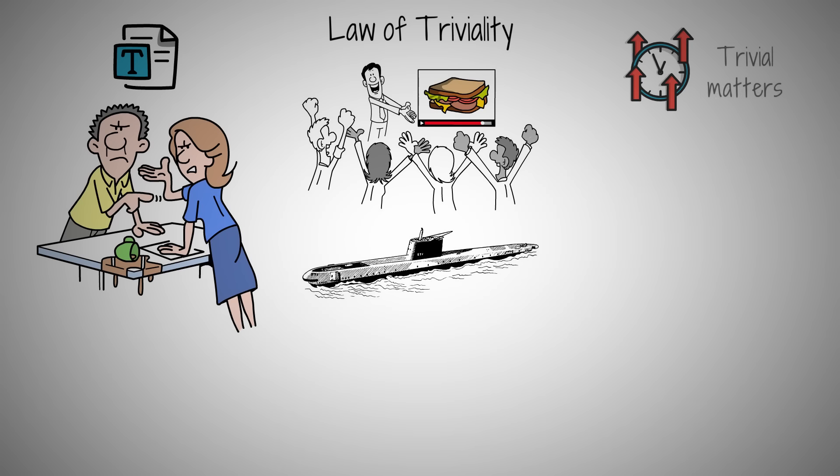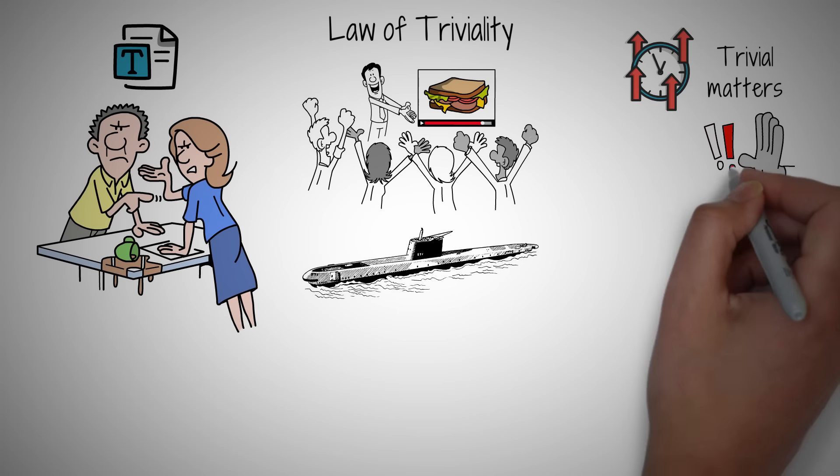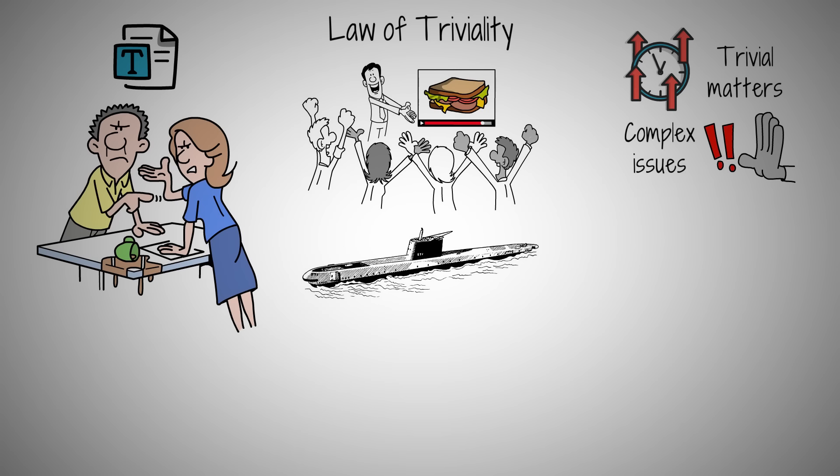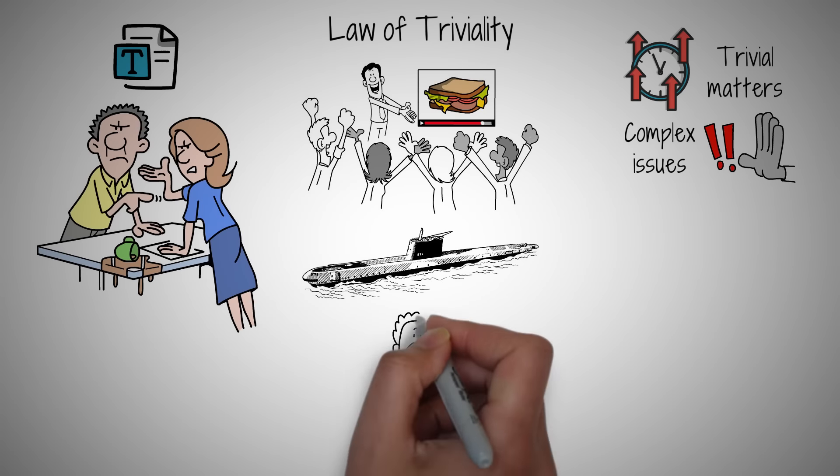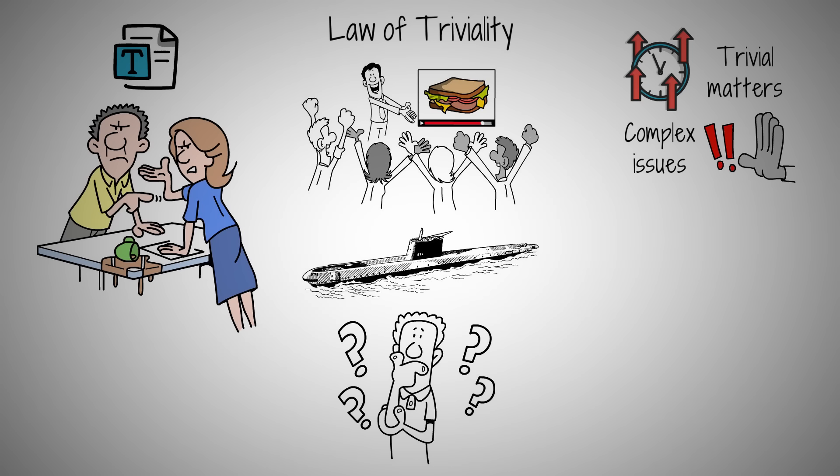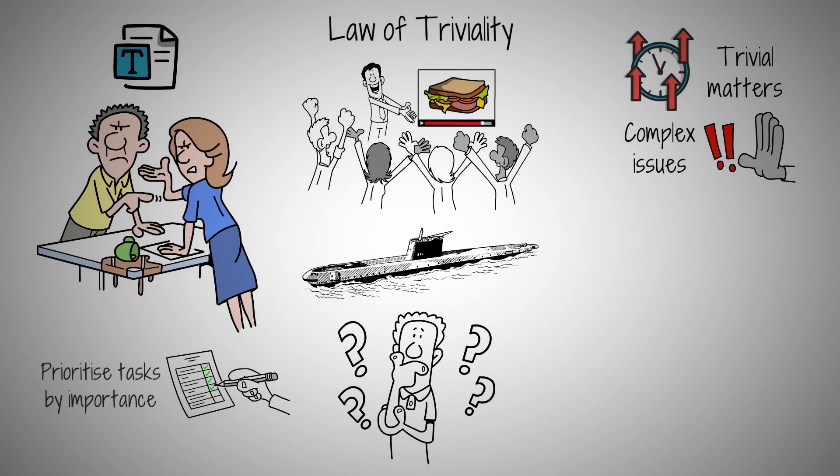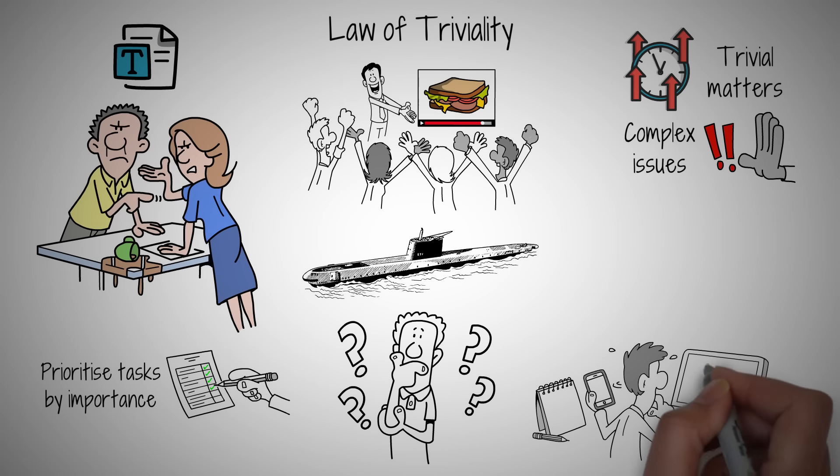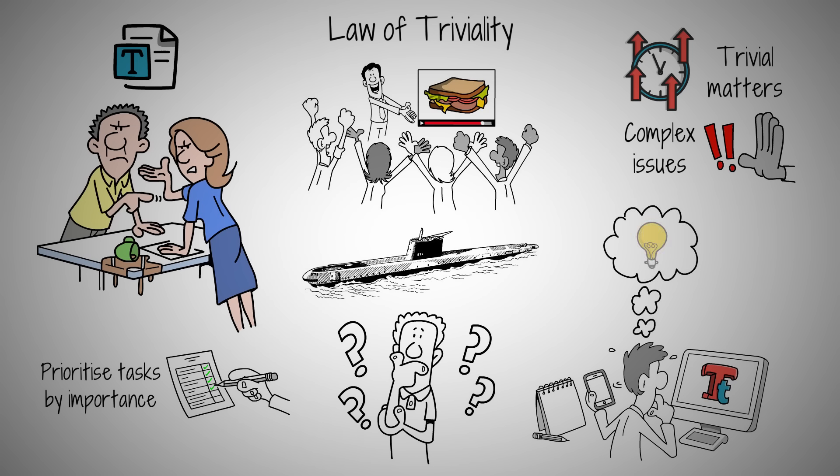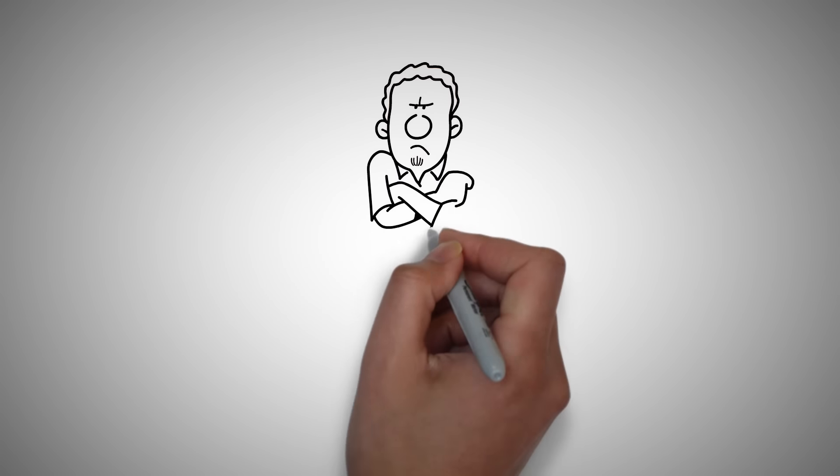The law of triviality highlights our tendency to devote disproportionate time to trivial matters, ignoring more significant, complex issues because they're harder to understand. So, how can we combat this in our lives? By recognizing when we're focusing on easy, inconsequential details instead of tackling the real challenges. Prioritize tasks by importance, not by ease or comfort. Notice when you're sweating the small stuff at the expense of what truly matters. Breaking free from the law of triviality can lead to more meaningful discussions and decisions in both personal and professional life.